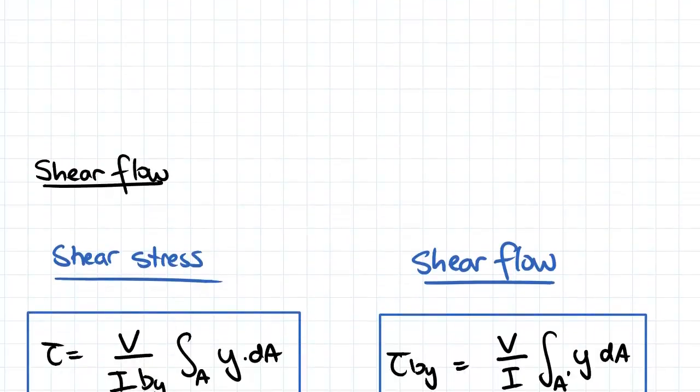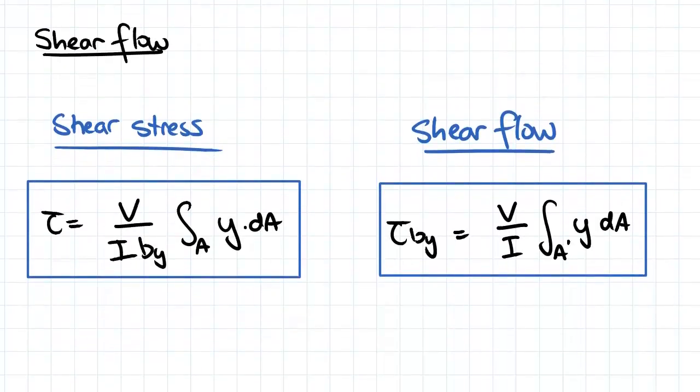So we introduced in the last couple of videos shear stress, and we worked out an equation for that in terms of the height of our section and the distance from the neutral axis, y. And that was dependent on the width of our section at a certain point.